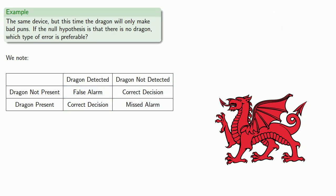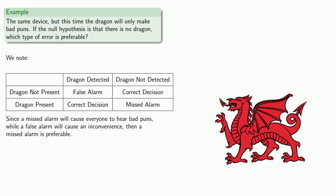In this case, a missed alarm will cause everyone to hear bad puns. Meanwhile, a false alarm will cause an inconvenience.